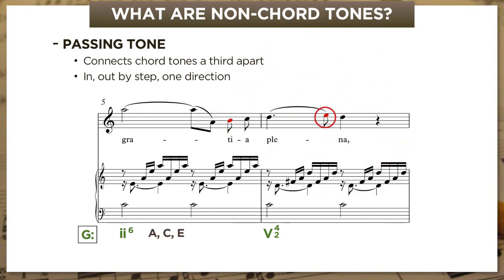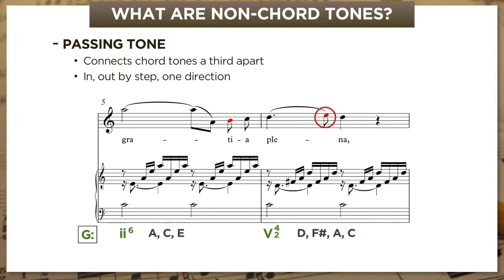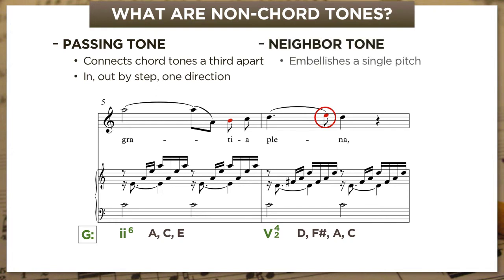Now let's look at the E natural in the next bar. This too is not part of the underlying chord—we've got a D dominant seventh, and E is not part of that. Like the passing tone, it's approached and left by step. But the difference is that we reverse direction rather than moving in a straight line. This is called a neighbor tone: it embellishes a single pitch by moving to an adjacent note and then right back again by step.